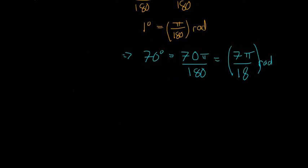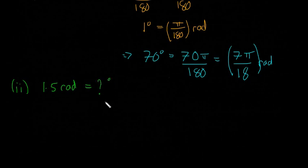Now we're going to look at the opposite. The question is going to be 1.5 radians—how many degrees is that? We're going to start with the exact same thing. We're going to say π radians is equal to 180 degrees.